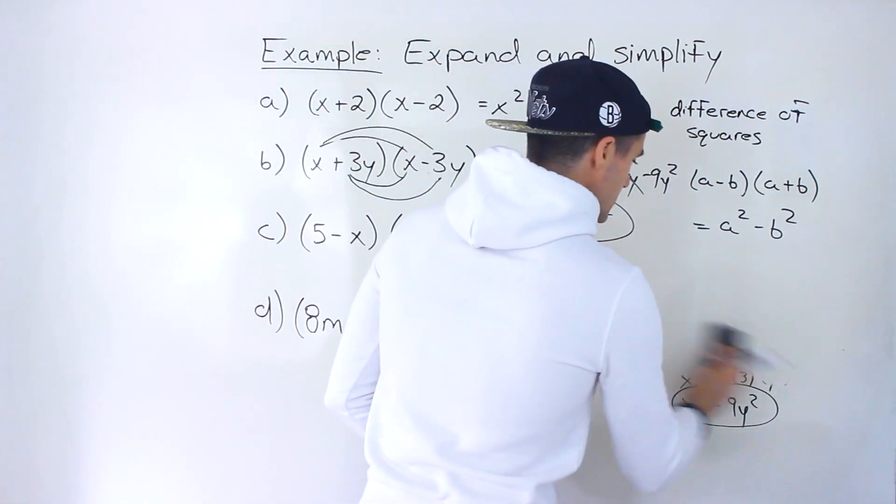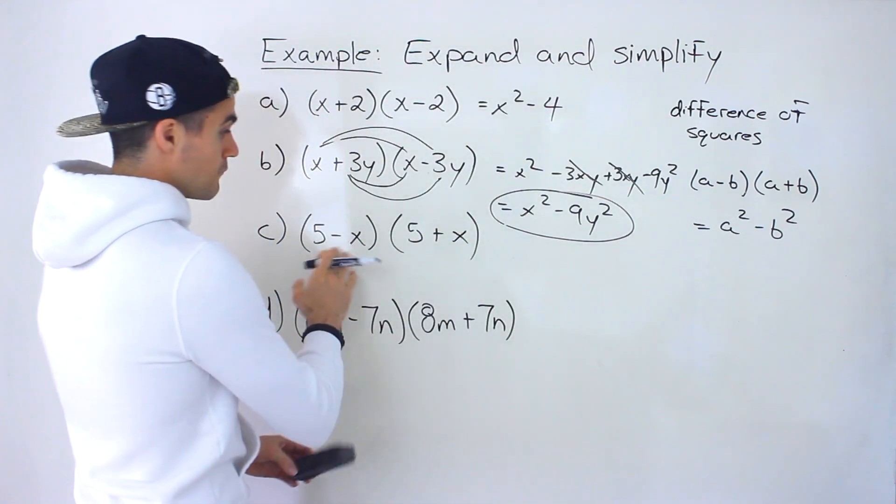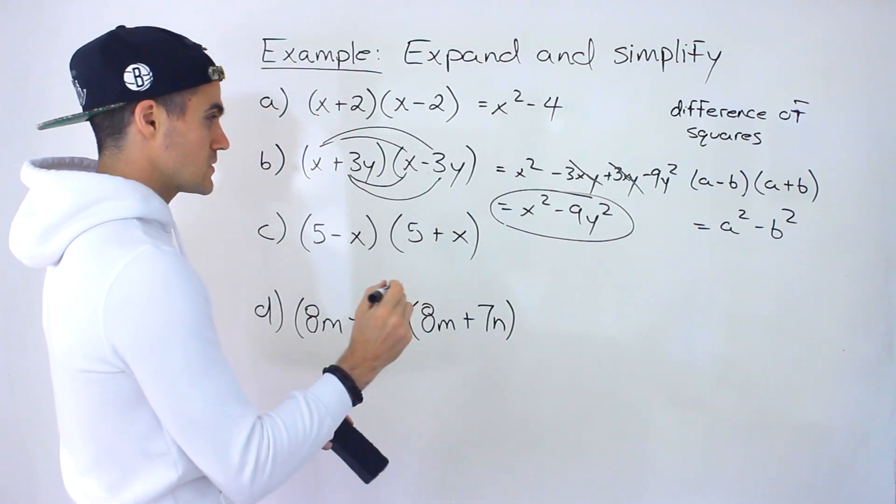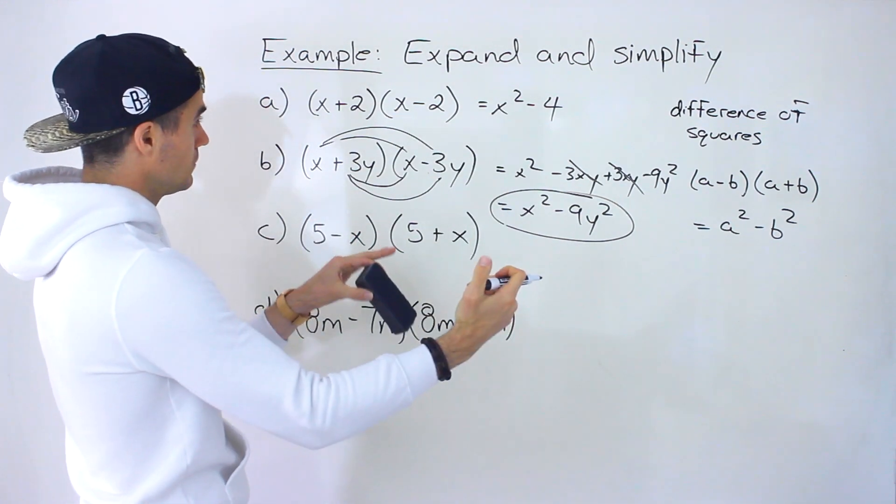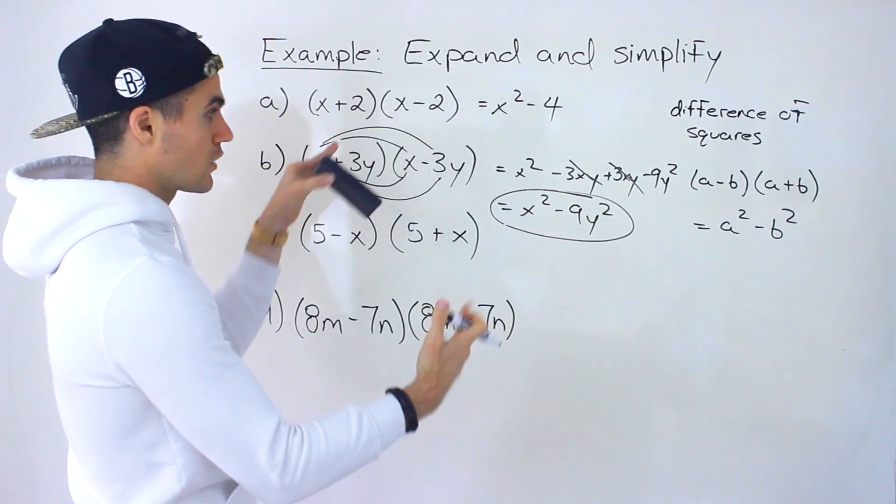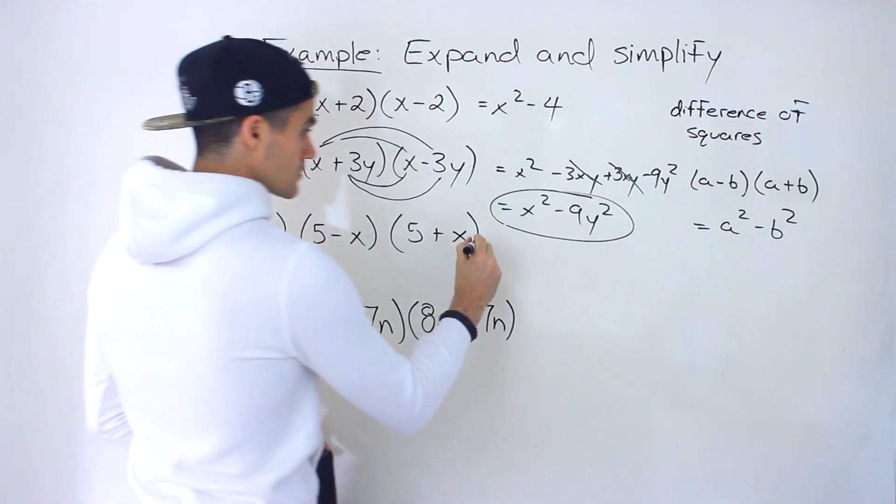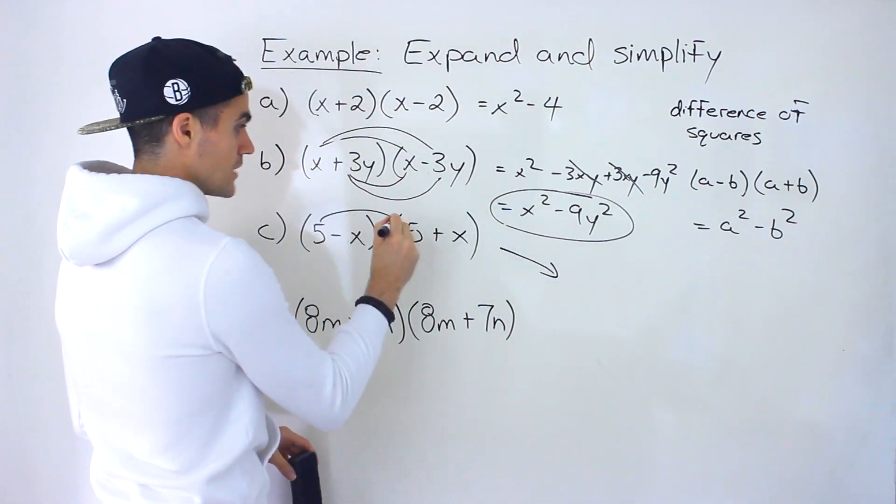Moving on to the next one, we got 5 minus x, 5 plus x. Notice this one's a little bit different because here the variable is on the right side of the binomial versus here, the variable is on the left side. Same process though. So you do 5 times 5, which is 25.